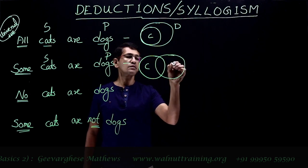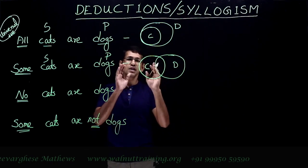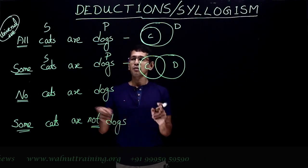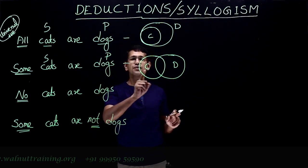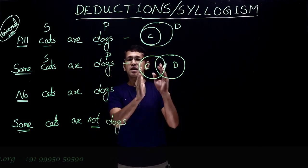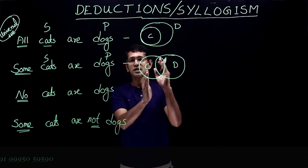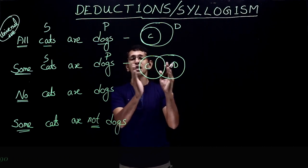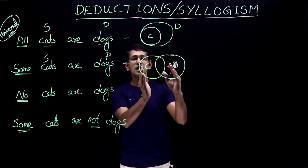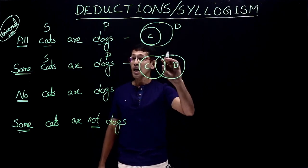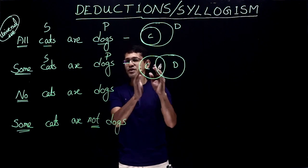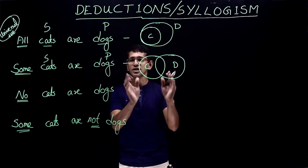For all these diagrams, our objective is to reduce the intersection. At the same time, whatever is given in the statement must be true for the diagram as well. So for some cats or dogs, there must be an intersection of cats and dogs, but we will keep it as limited as possible. If you increase this intersection, all cats would be dogs — we don't need that, so we just reduce the intersection.